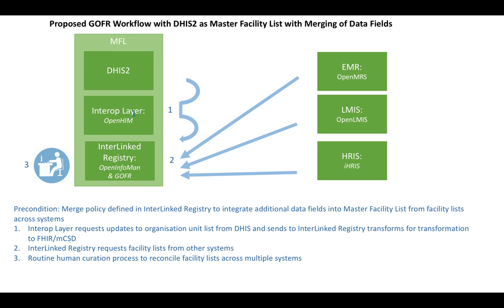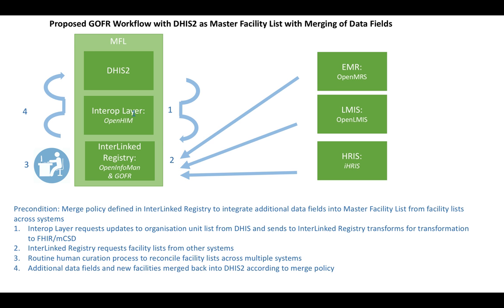Third, there is a human-driven curation process to reconcile the facility lists across these multiple systems, to look for duplicated facilities — for example, in an EMR system — against the master facility list, and do cross-side mapping of identifiers between systems. Once we've done that reconciliation process, the additional data fields can be pulled in from these alternate facility list data sources — the EMR, the LMIS — into DHIS2 as the master facility list, according to the merge policy defined earlier.